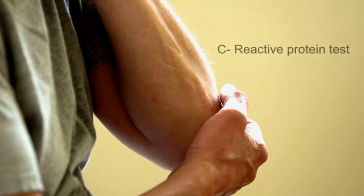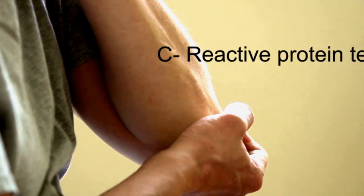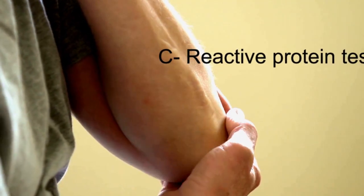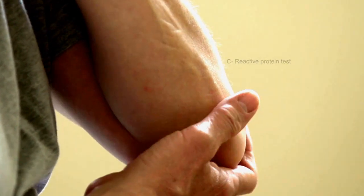C-reactive protein test helps in evaluating the level of inflammation in the body. The test will usually reveal a very low value under normal conditions, and any deviation from the normal values indicates that there is inflammation in the body.